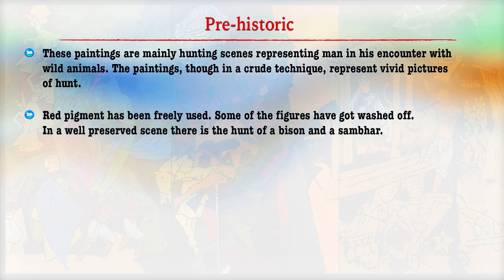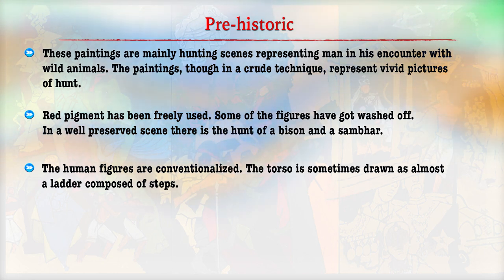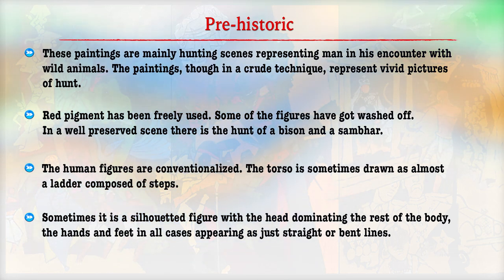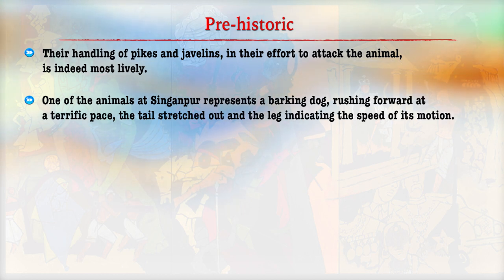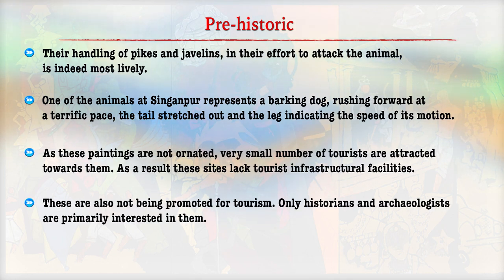In a well-preserved scene, there is a hunt of a bison and a sambhar. The human figures are conventional in nature, with the head dominating the rest of the body. The hands and feet appear as just straight lines. The handling of the javelin is an important part of the paintings, as an effort to protect oneself from animal attacks. One of the animals at Signapur represents a barking dog rushing forward at a terrific pace, with trail stretched out and legs indicating the speed of its motion. This contrasts with the stylized form of the human figures. All these paintings are not ornamented.